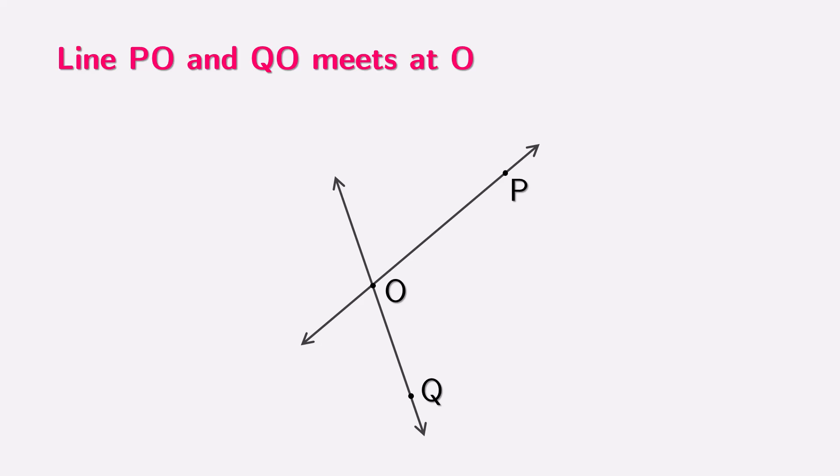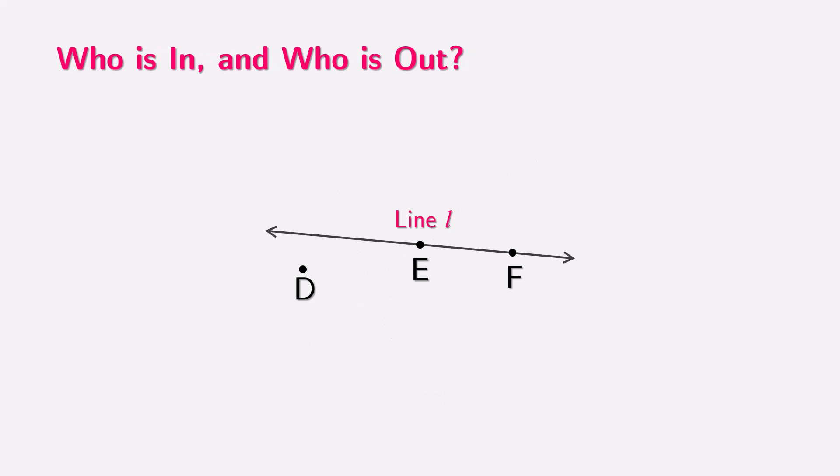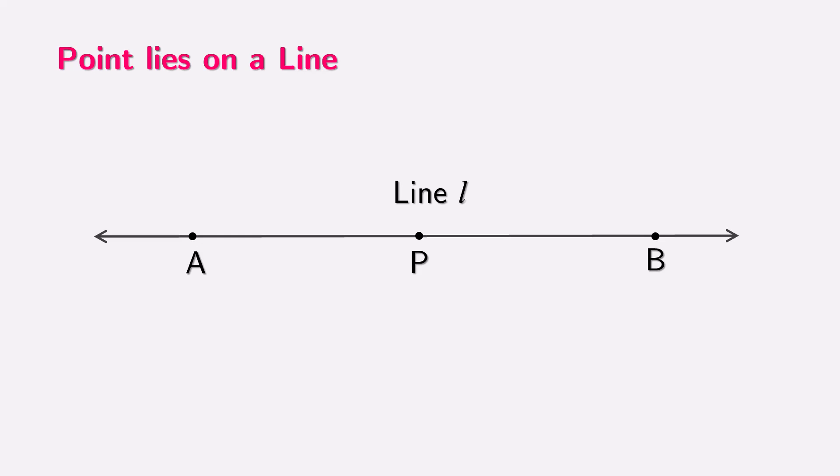Now, let's draw a figure to show two lines, OP and OQ, meeting at point O. Imagine these lines extending in both directions, but they share a common point at O. Let's draw a figure to illustrate this scenario. We have a line labeled L, which passes through points E and F. However, point D is not on the line. Now, let's draw a figure where point P lies on the line AB. Start by drawing a straight line and label it AB. Then, mark a point P somewhere on this line between points A and B, and label everything clearly to complete the illustration.